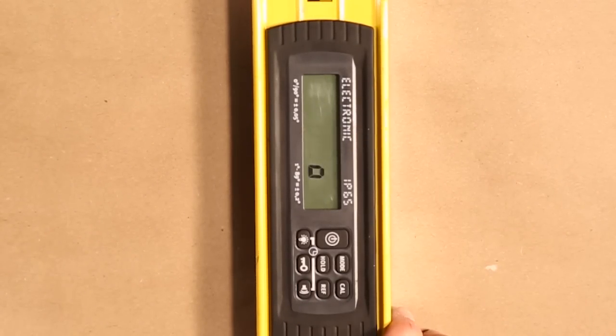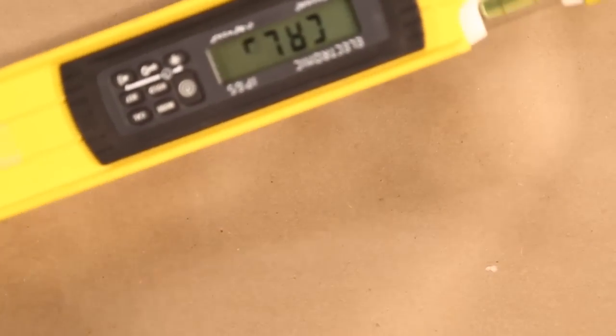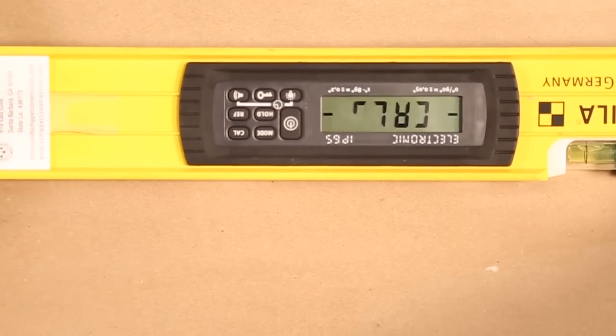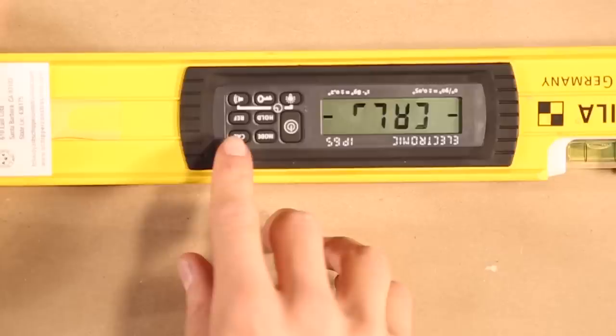You will notice that the second line will stop flashing. That's when you do your second rotation. You're going to center your vial 100%. Hit calibration.